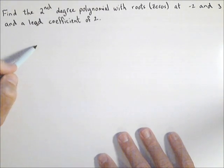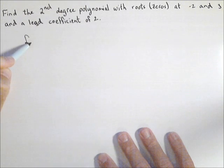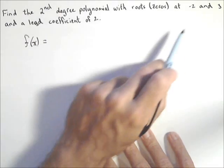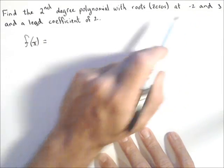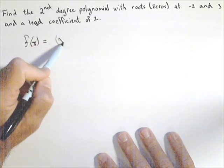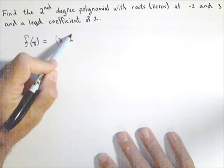One way we can go about this is to use factored form. Remember, if negative two is a zero, then x plus two has to be a factor.